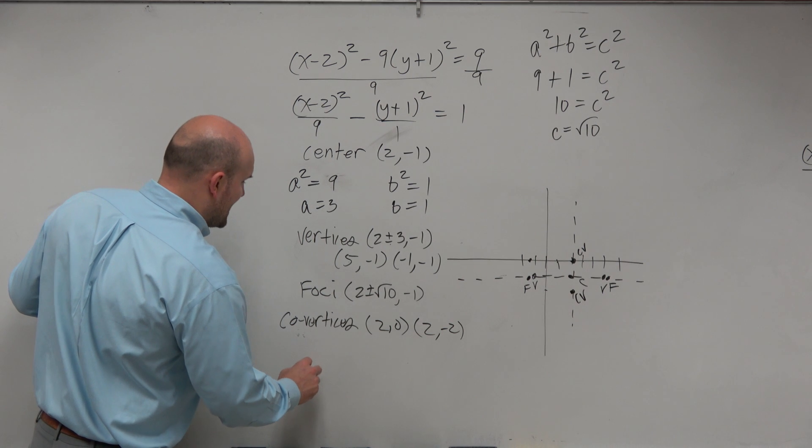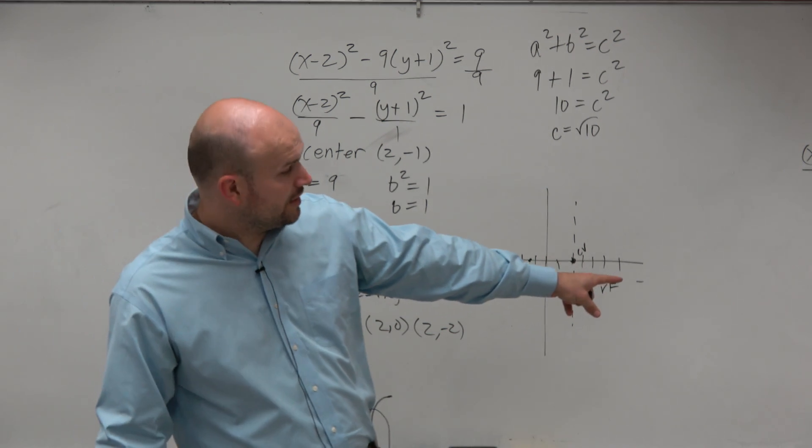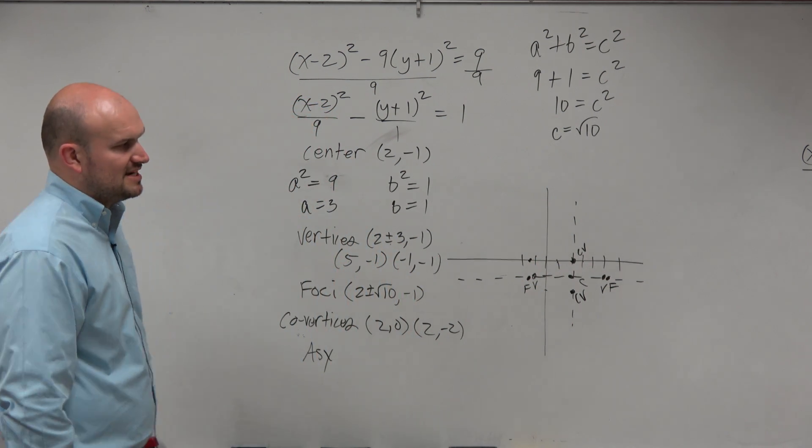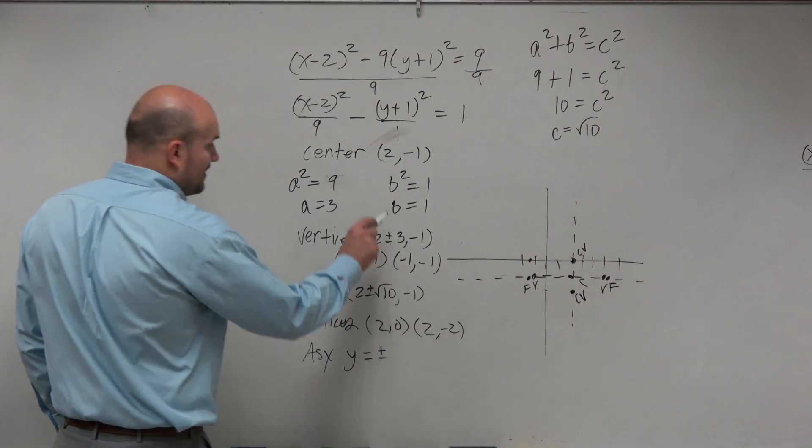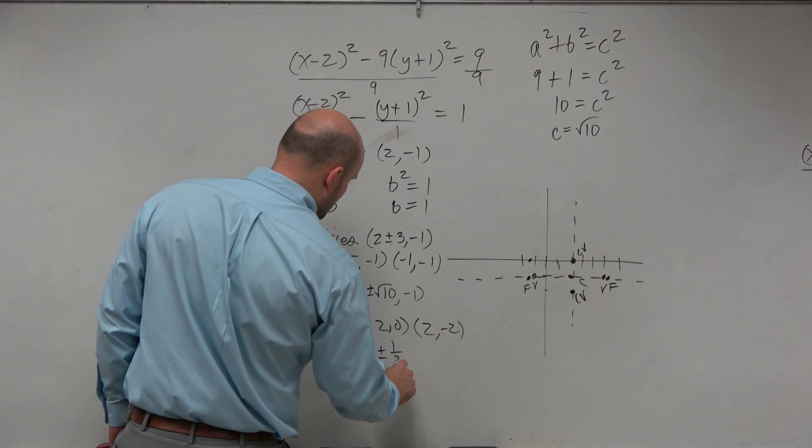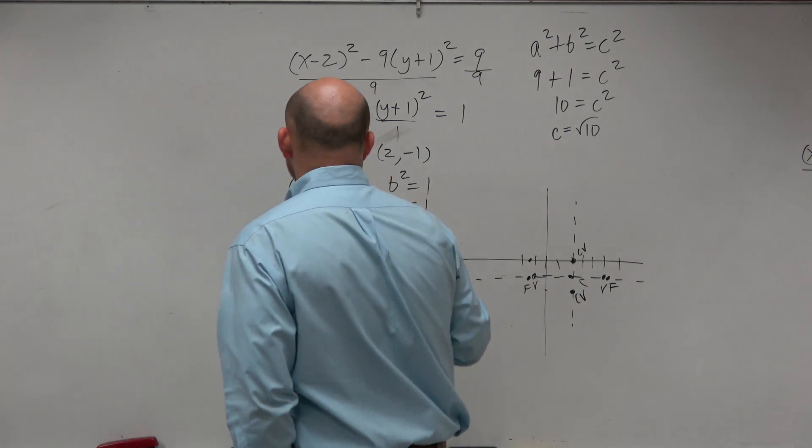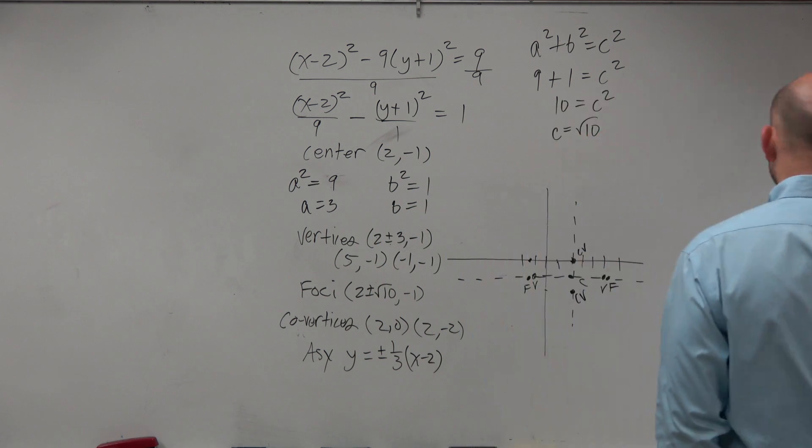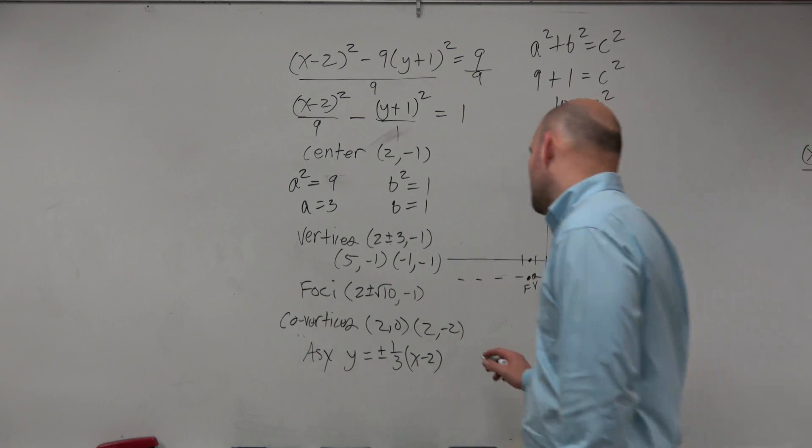Last but not least is the asymptote. The equation for an asymptote with a horizontal transverse axis is y equals plus or minus b over a times (x - h). Let's plug that in there. So y equals plus or minus b over a, so that's 1/3, times (x - h). So that's going to be (x - 2). And then plus k. So k, in this case, is going to be -1, so that would be minus 1.